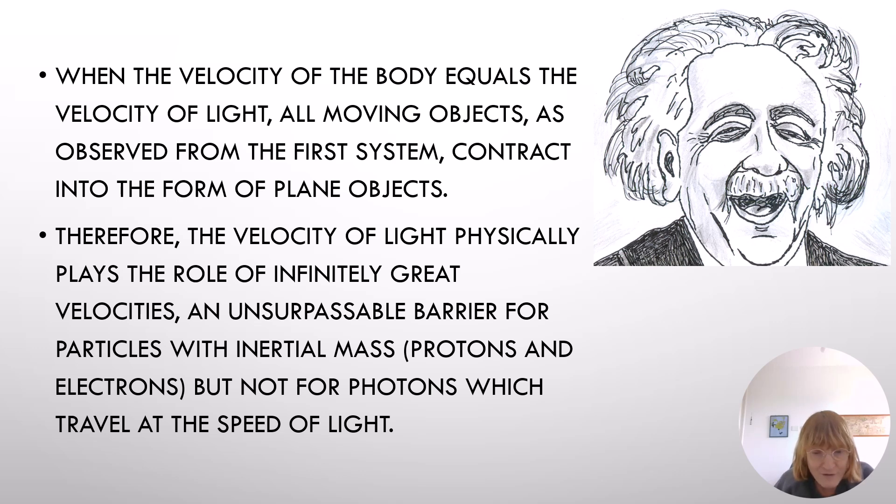When the velocity of the body equals the velocity of light, all moving objects as observed from the first system contract into the form of plane objects. Therefore, the velocity of light physically plays the role of infinitely great velocities, an unsurpassable barrier for particles with inertial mass, protons and electrons, but not for photons which travel at the speed of light.